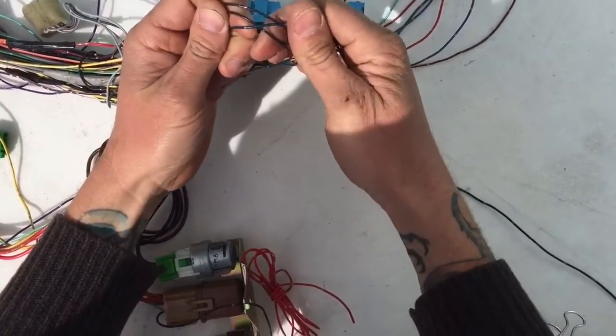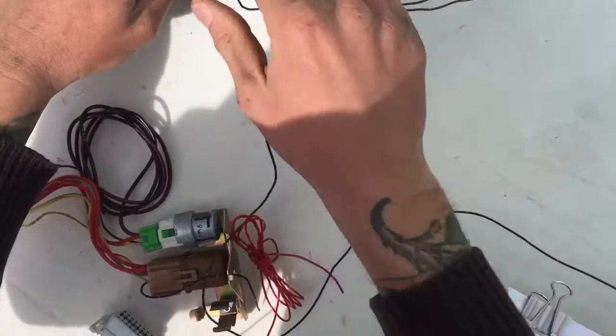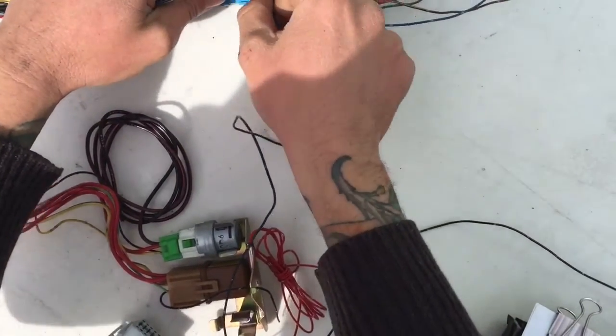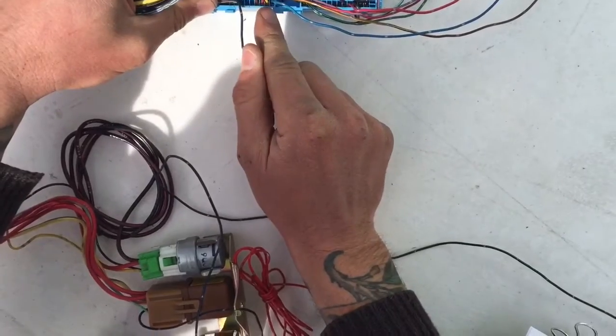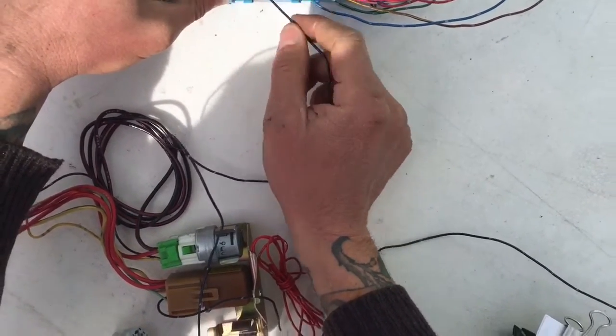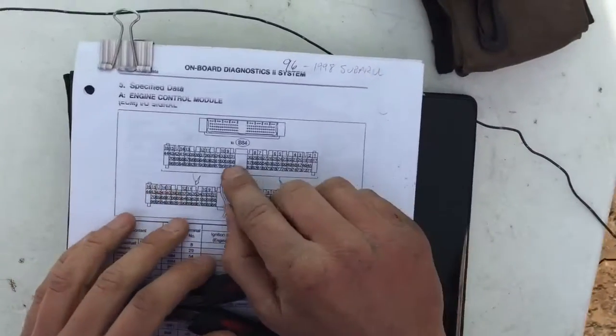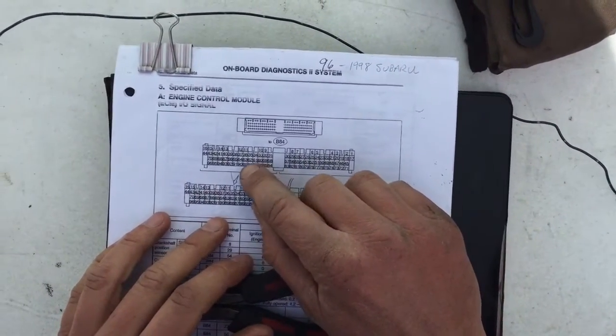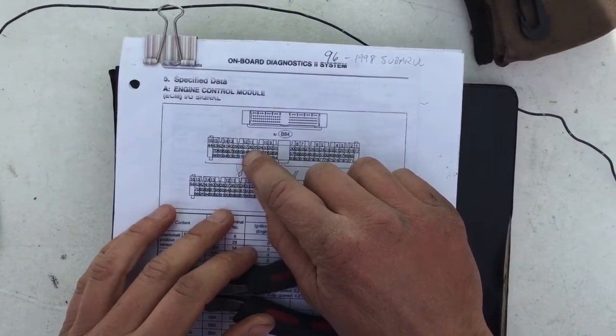The final wire that we have to identify is this black blue, and I believe this is going to be the tachometer. So we have one, two, three, four, five, six, seven over, one up. That's pin 64.